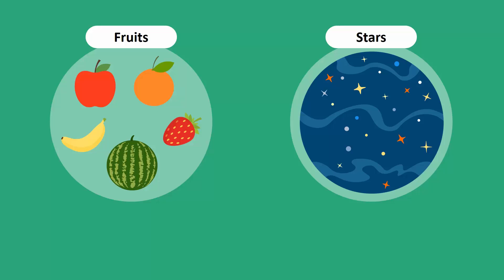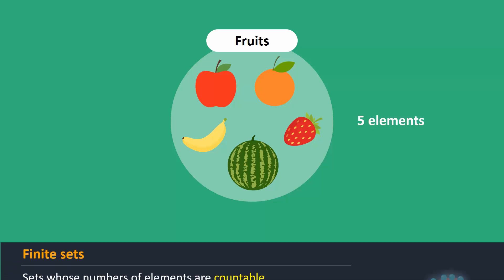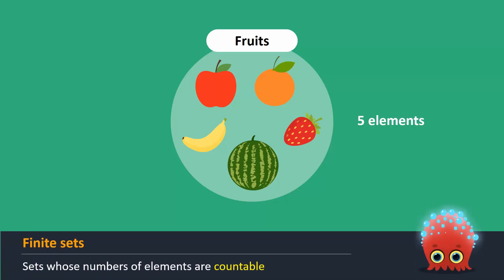In the set of fruits, there are five elements. Such sets, like the set of books in the bag, contain elements that are countable. They are called finite sets.